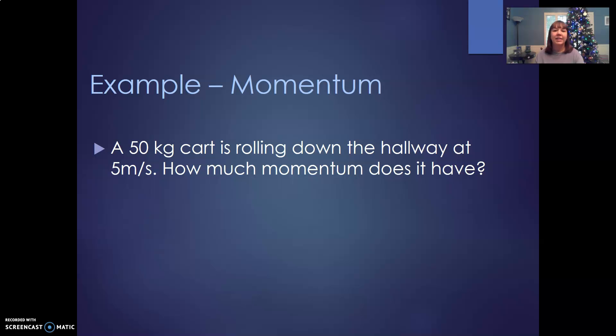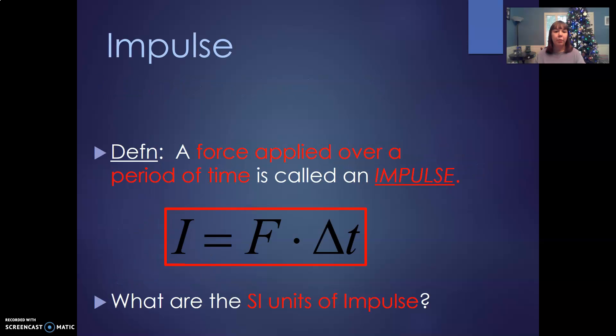So let's look at an example. We've got a 50-kilogram cart rolling down the hallway at 5 meters per second. How much momentum does it have? Momentum is mass times velocity. So you take the mass of 50 times the velocity of 5, 50 times 5, 250 kilogram meters per second.